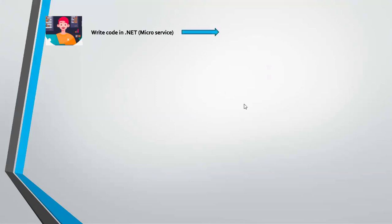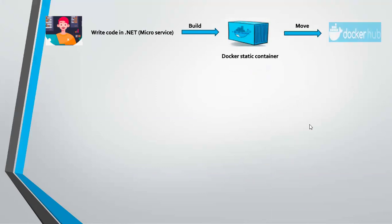Once you write your application in .NET or as a microservice, you build it with a Dockerfile and create a Docker container. Once you create a Docker container, you push it to Docker Hub. Up to this point, your .NET application is containerized. The next step is to hand over that Docker container to Kubernetes.